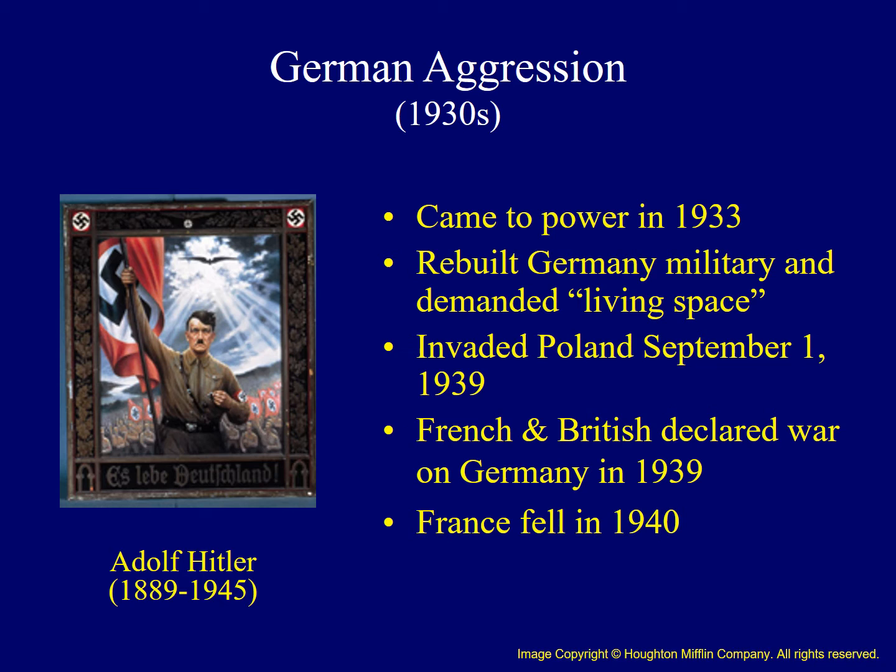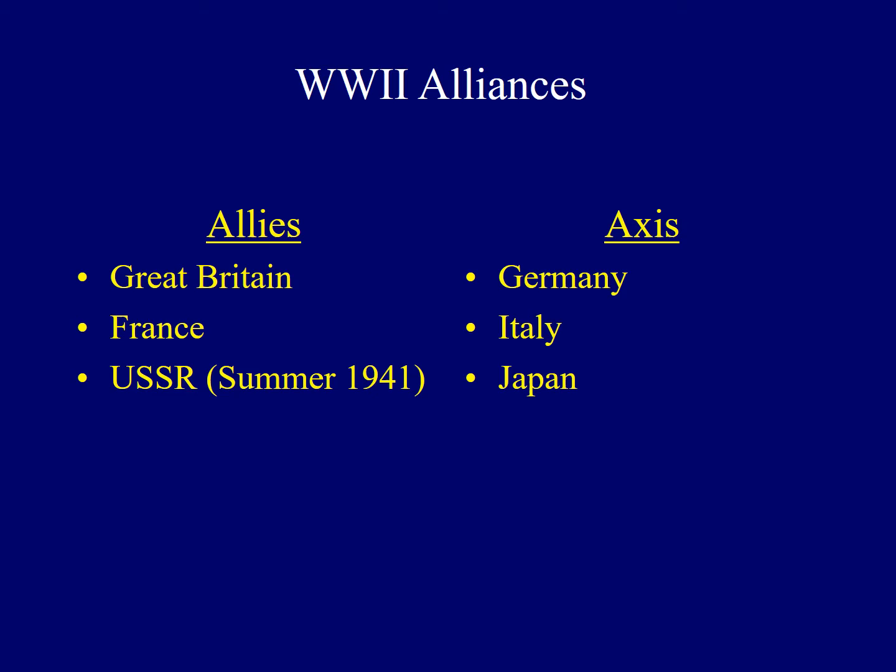There were two major sets of alliances associated with World War II. The Allies included Great Britain, France, and by the summer of 1941, the Soviet Union. The Axis powers included Germany, Italy, and Japan.